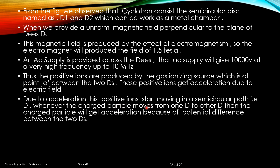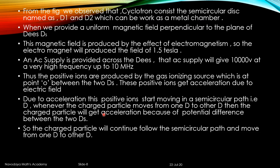Due to acceleration, positive ions start moving in a semicircular path in D. Whenever the charge particle moves from one D to the other D, the charge particle will get acceleration because of the potential difference between the two Ds. So the radius increase and acceleration happen when the particle comes from D1 to D2 and then from D2 back to D1 — meaning twice per revolution, acceleration develops due to the electric field, and the radius continuously increases. So the charge particle continues to follow the semi-circular path and move from D to D.